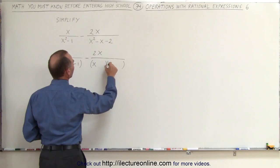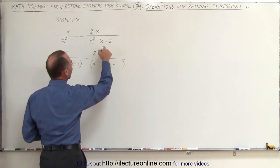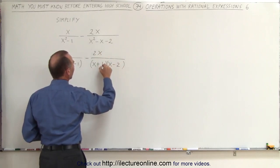we're going to again get two binomials. We have an x and an x. Since this is a negative, this is a plus and a minus. The largest of the two must be the negative, so a negative 2 and a plus 1.